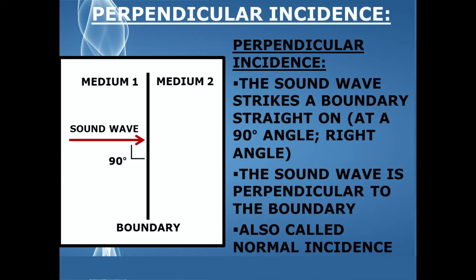The first type of ultrasound incidence is known as perpendicular incidence. This is when a sound wave strikes a boundary straight on at a 90-degree angle, or right angle — the sound wave is exactly perpendicular to the boundary. This is also known as normal incidence. You can see in the diagram that the red arrow is striking that boundary at exactly a 90-degree angle.